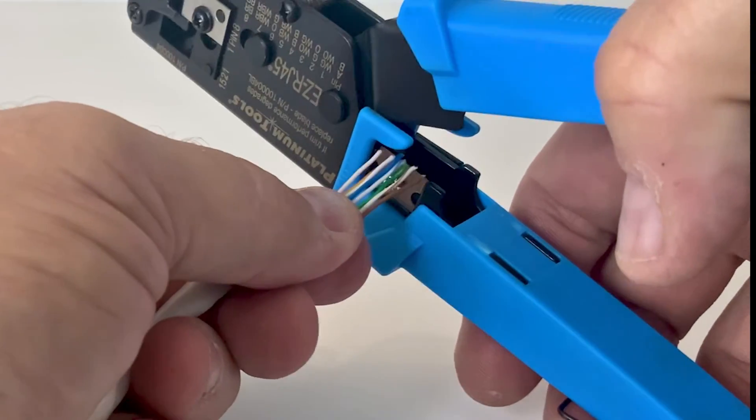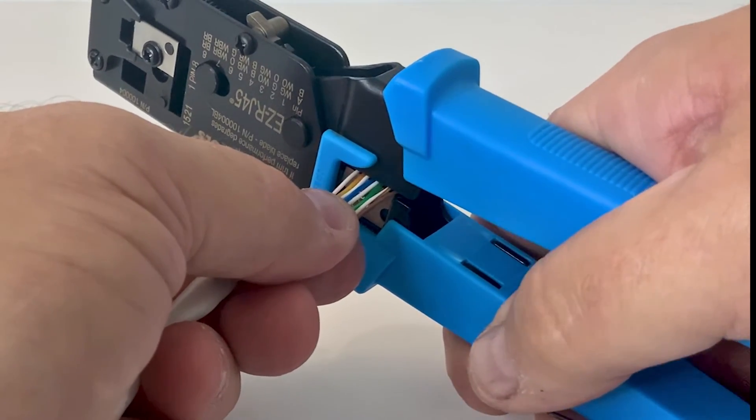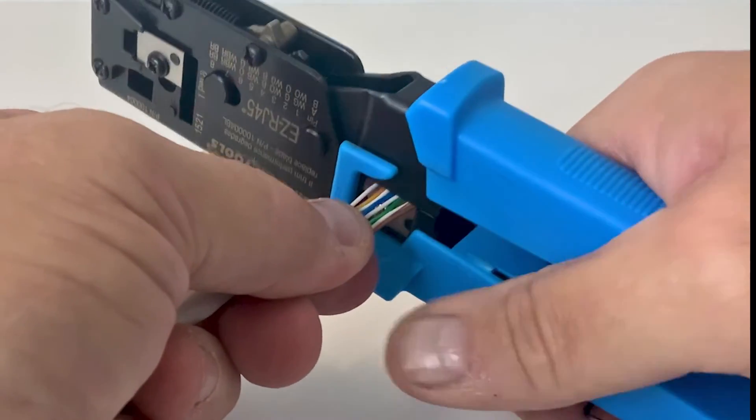Next, you can use the built-in wire cutter on the EZRJ45 crimp tool to trim all the wire ends to make sure all the conductors are of equal length.